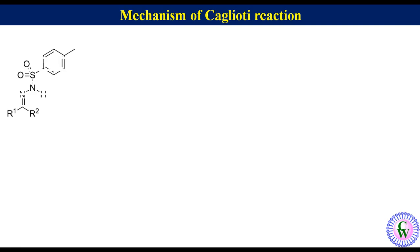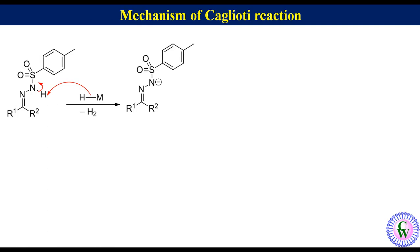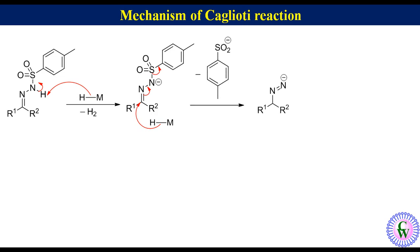Mechanism of Caglioti reaction: This is the tosylhydrazone. In the case of basic hydride donors like LiAlH4, deprotonation occurs resulting in liberation of hydrogen gas and formation of a tosylhydrazone anion. Hydride attack with concomitant elimination of the sulfinate group gives an azoanion. This azoanion eliminates nitrogen gas to produce a carbanion, and this carbanion finally gets protonated to produce the alkane product.